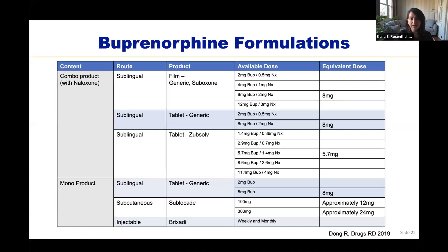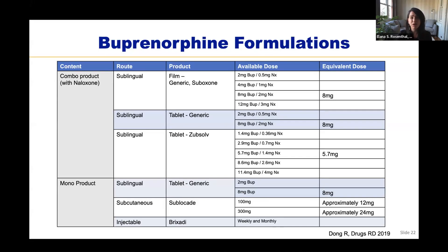Buprenorphine comes in several formulations. It can come in combination with naloxone or as a monoproduct. Naloxone is not meant to be an active agent, but rather deters injection of buprenorphine — when administered sublingually as prescribed, naloxone is not absorbed. But when injected, naloxone will cause withdrawal. Buprenorphine can be administered sublingually — mainly what we see prescribed — or as an injection given weekly or monthly depending on dose and brand. Sublingual formulations come as brand-name Suboxone or many generics, in tablets or films.